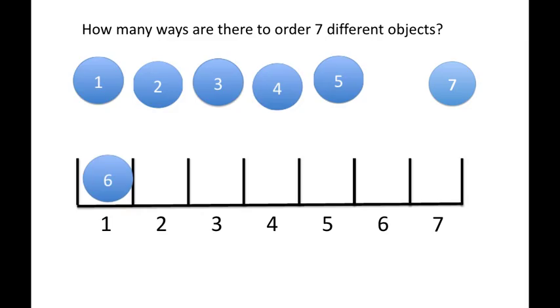In the second bin, we now have only 6 possibilities. Let's say we took this one. And then the next one, we have 5 possibilities. So we get this one.